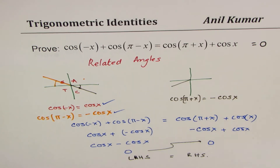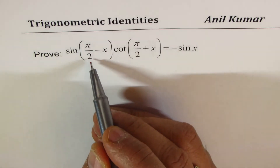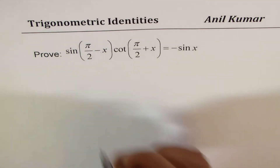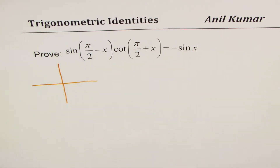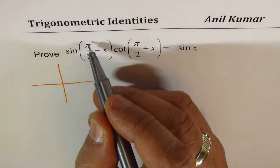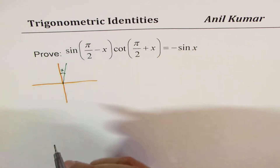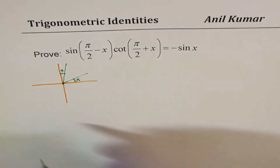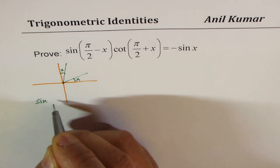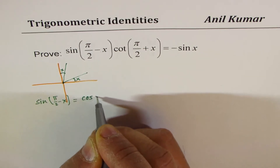Here is the second example. This time we have terms with π/2. Whenever you have π/2, we are talking about complementary angles. sin(π/2 - x) means you are in quadrant 1, and sin(π/2 - x) equals cos(x).